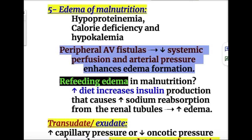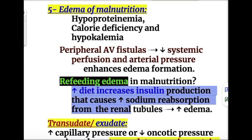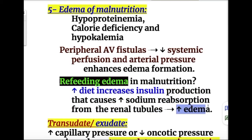Refeeding edema in malnutrition: increased dietary intake increases insulin production, which causes increased sodium reabsorption from the renal tubule, thereby increasing edema. So refeeding in malnutrition increases insulin production and causes increased sodium reabsorption in the renal tubule.